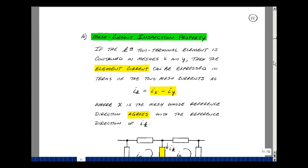Let me state the mesh current inspection property. If the kth 2-terminal element is contained in meshes x and y, then the element current can be expressed in terms of the two mesh currents x and y with the following relationship. It's the difference of i_x and i_y, where i_x is the mesh whose reference direction agrees with the reference direction of i_k. Let me show you a picture to better illustrate this.